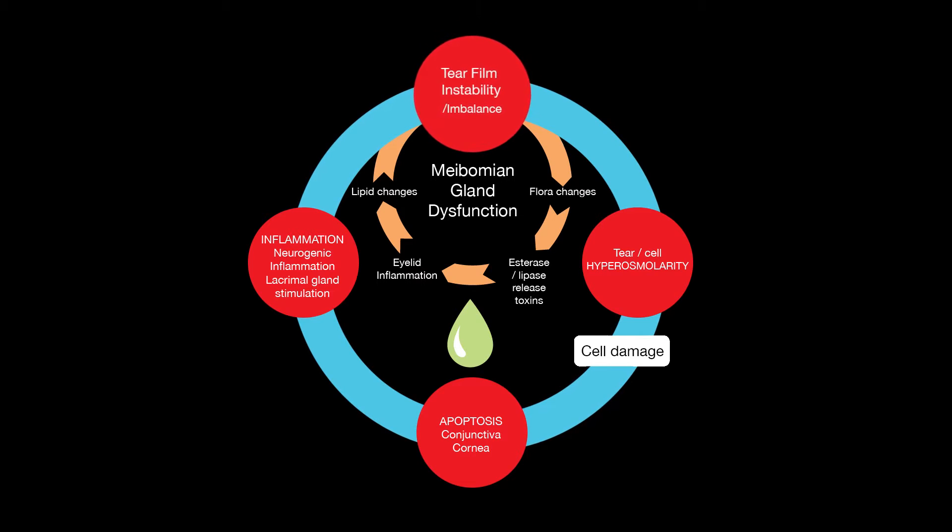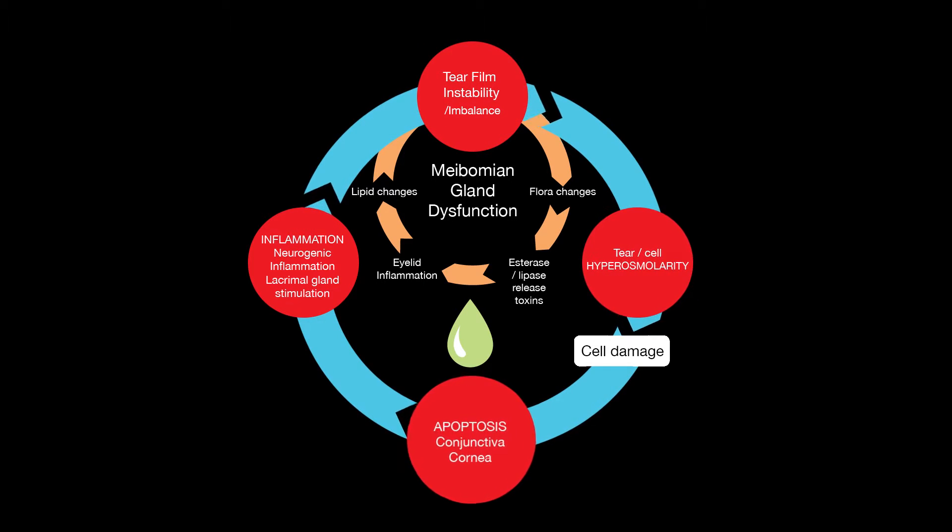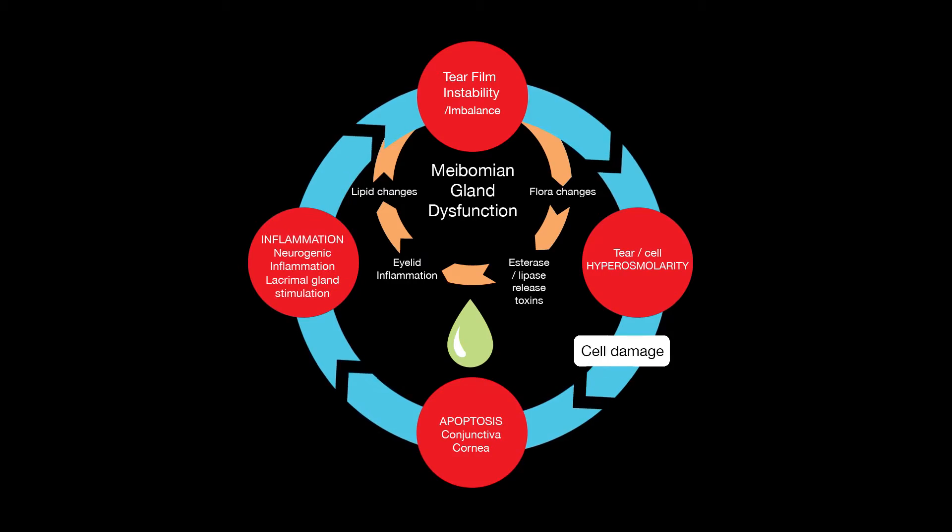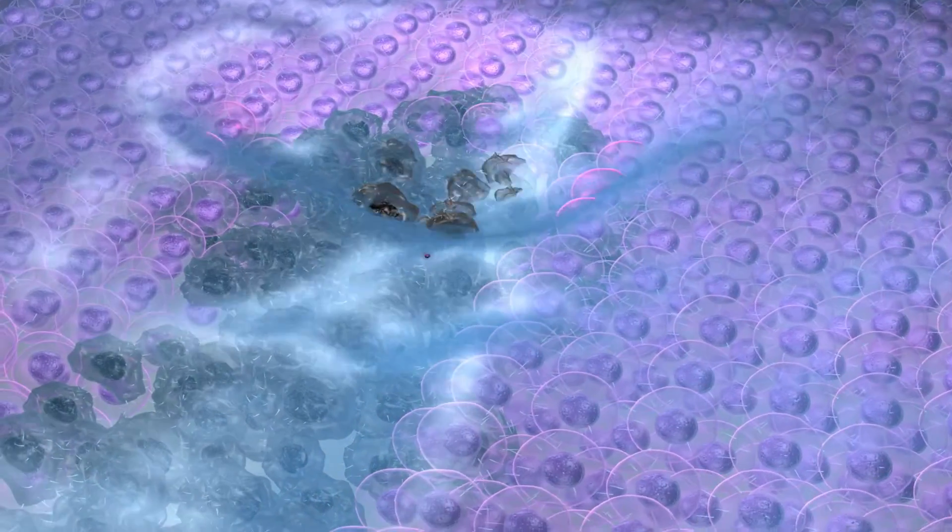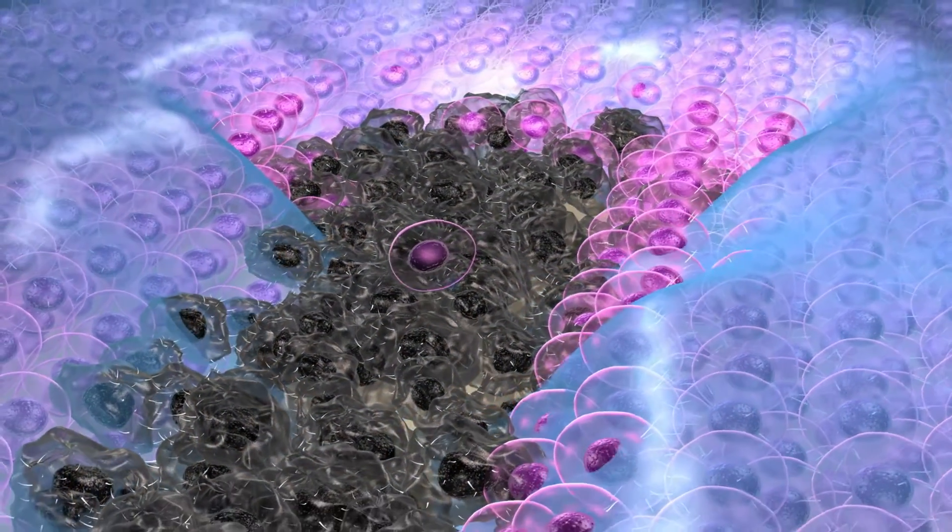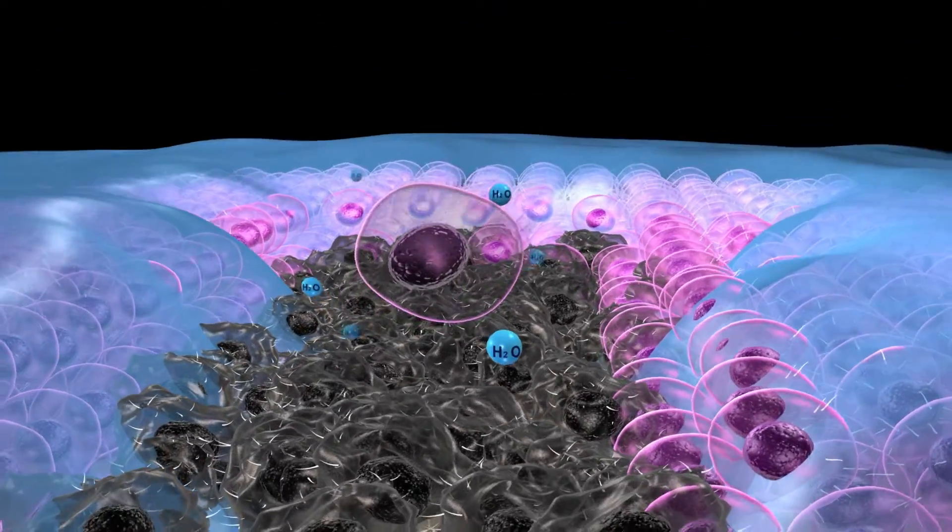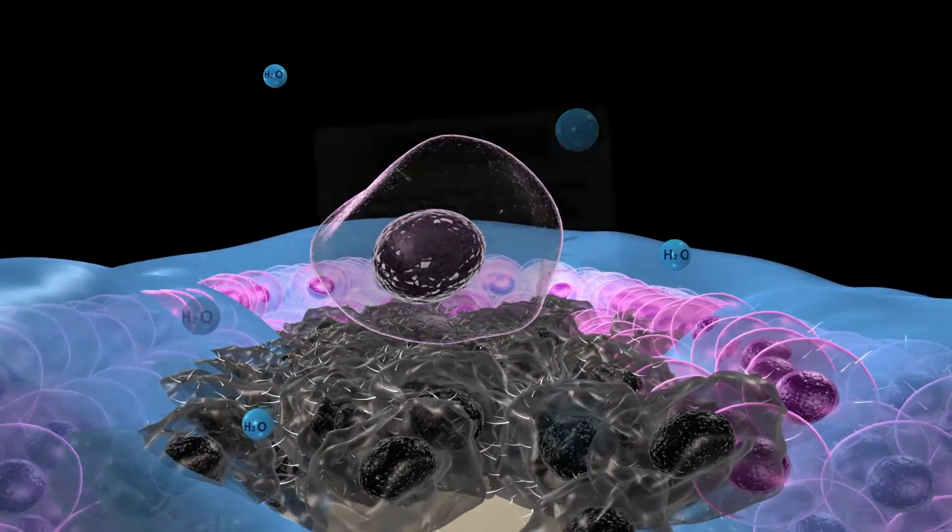These include tear film instability, hyperosmolarity, cell death, and inflammation. While the circle can be entered at any point, hyperosmolarity is considered the primary driver and should always be considered within dry eye therapy.